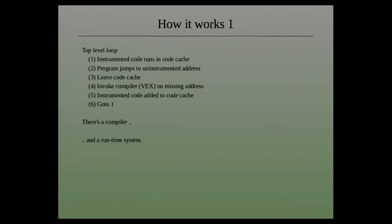So this is approximately what goes on in the middle of Valgrind. The system is mostly executing instrumented code which lives in some big code cache, and that runs inside the code cache until the program jumps to some code address which hasn't been translated yet. So we leave the code cache and summon the compiler to make an instrumented version of the new address, put that into the code cache, link it to other parts of the code cache, and then continue.